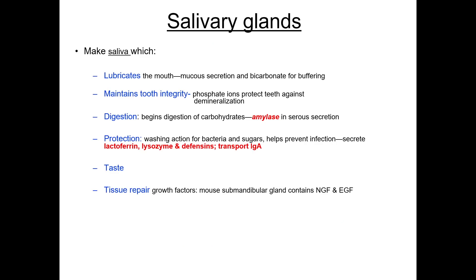The primary function of the salivary glands is to make saliva — up to half a liter daily. Saliva contains proteins, mucus, ions, water, and immunoglobulin A. It's a fluid whose important health properties are only beginning to be appreciated. Saliva lubricates, maintains integrity of the teeth, begins chemical digestion, and serves a critical protective function. In addition, it helps in taste and tissue repair. You should remember that saliva contains lipase and amylase, which perform the first steps of chemical digestion, and lysozyme and defensins important for protection.